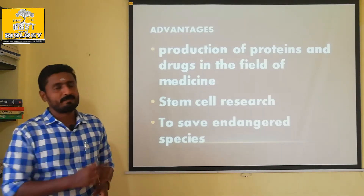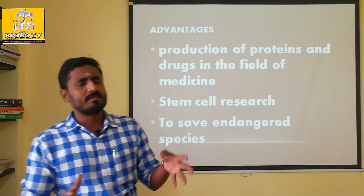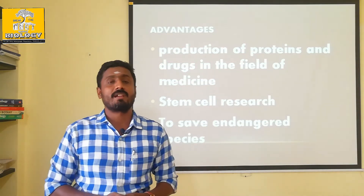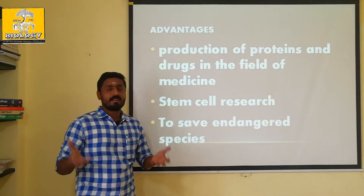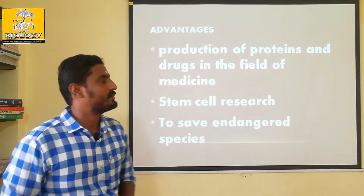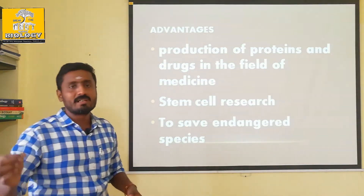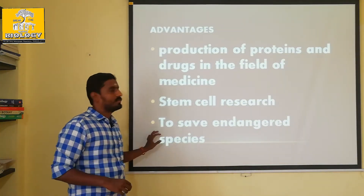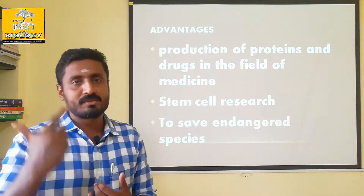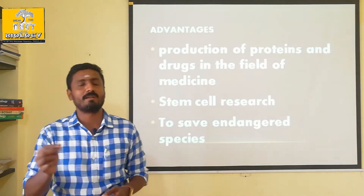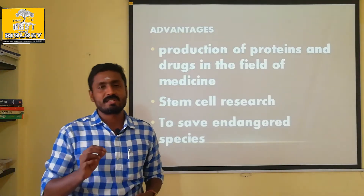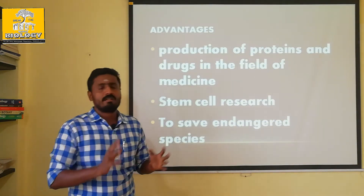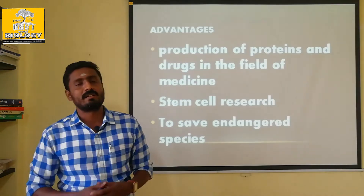To save endangered species — there are all kinds of species like the bison or cow. They are under endangered conditions in America. Previous species can be produced through cloning. A lot of endangered species, like the unicorn rhinoceros, are endangered, so cloning can be used to produce them, although it is not done at a large scale.